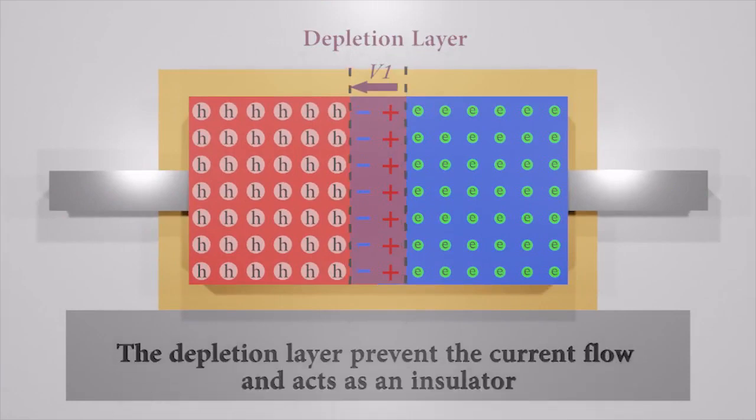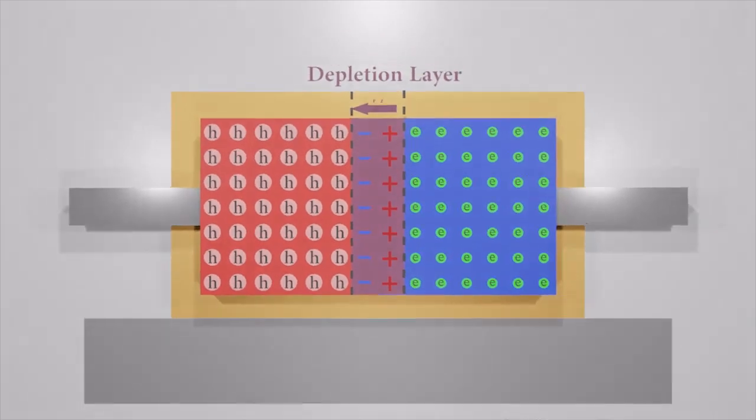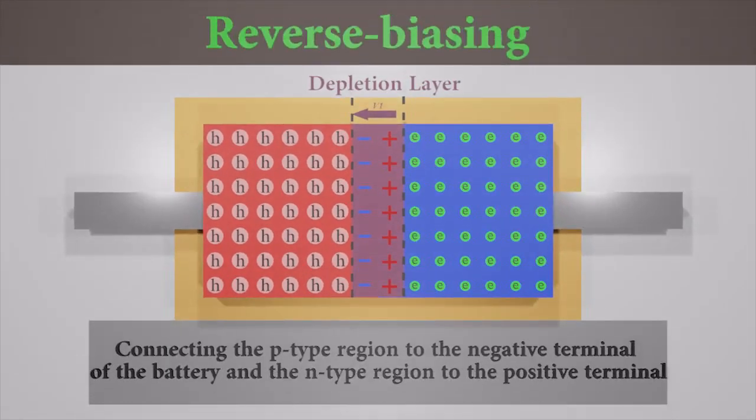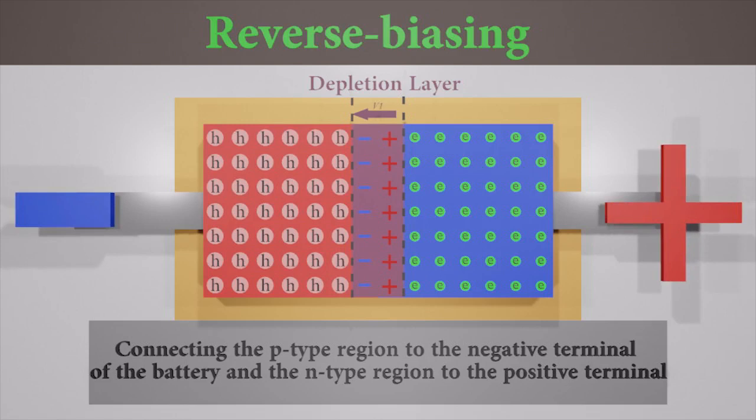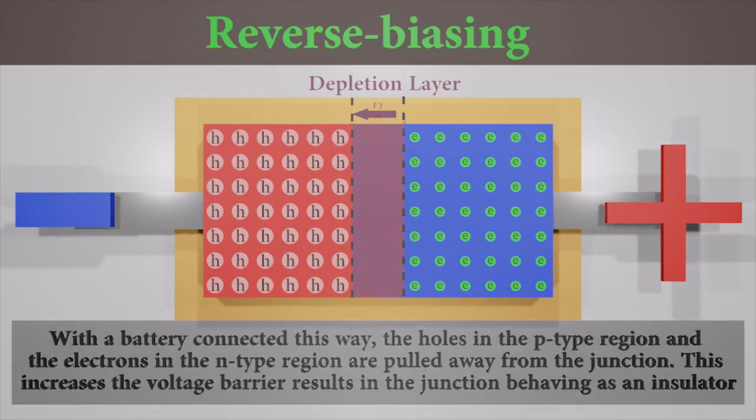We know the depletion layer normally prevents current flow through the diode. Let's see what happens in reverse bias configuration. The p-type is connected with the negative terminal and the n-type is connected with the positive terminal. We say the diode is in reverse bias. More electrons in the n-type material near the junction are pulled away from the junction and combine with the holes in the p-type near the junction.